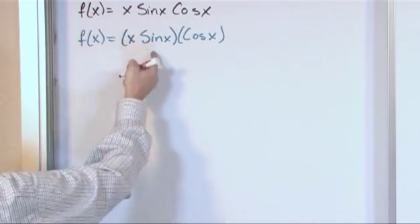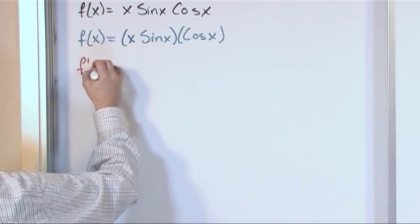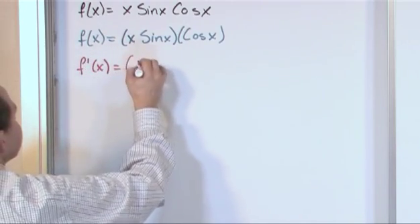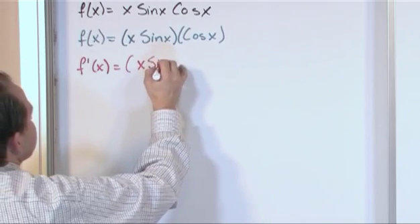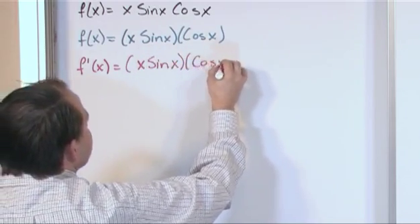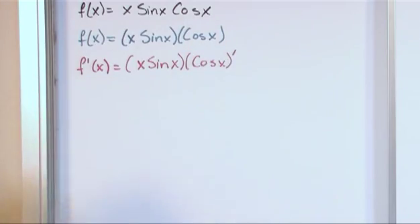Okay, so let's go ahead and take this derivative using this. The derivative will be the first function, which is x times the sine of x times the derivative of the second function, cosine of x prime, right?